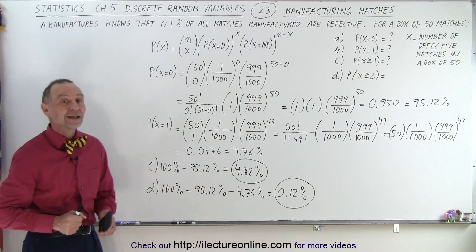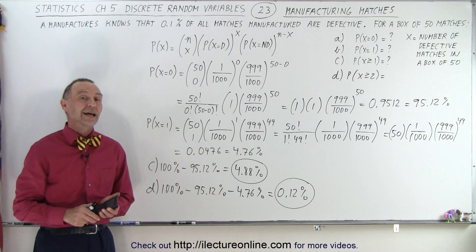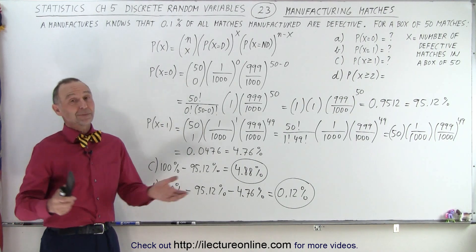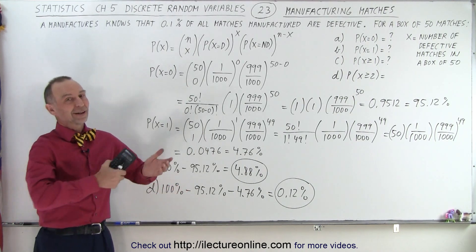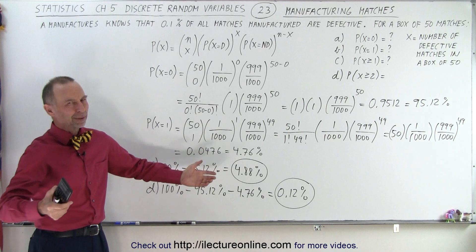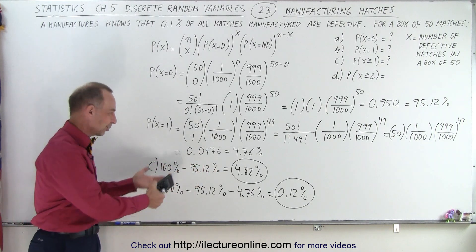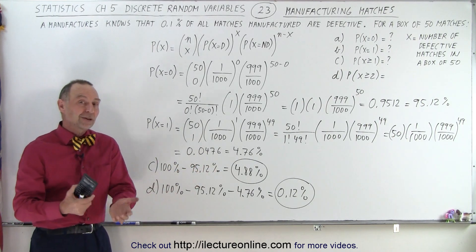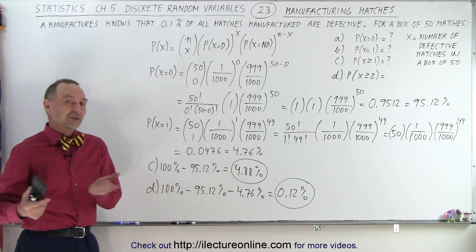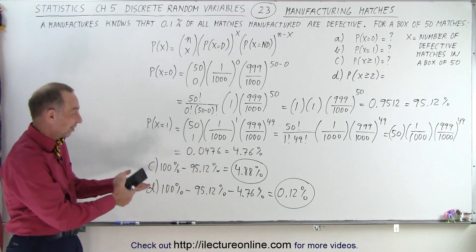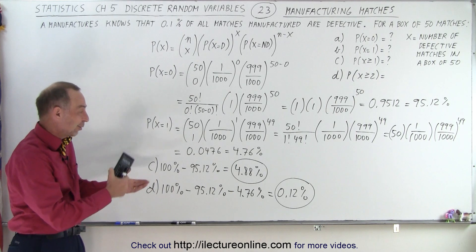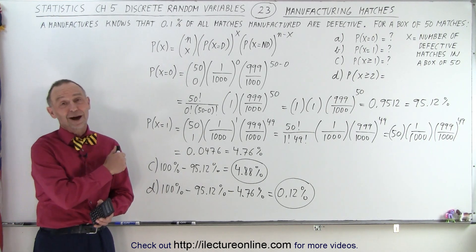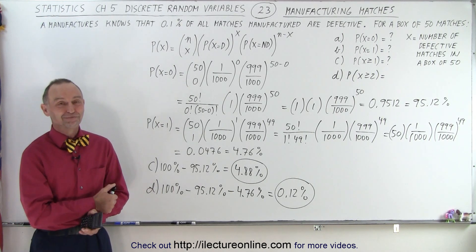That is how you calculate binomial probabilities. If you get a job at a manufacturing plant that makes matches, you can tell them the probability that a customer will have a box of 50 matches with zero defects, one defect, or more than one defective match — and that is how it's done.